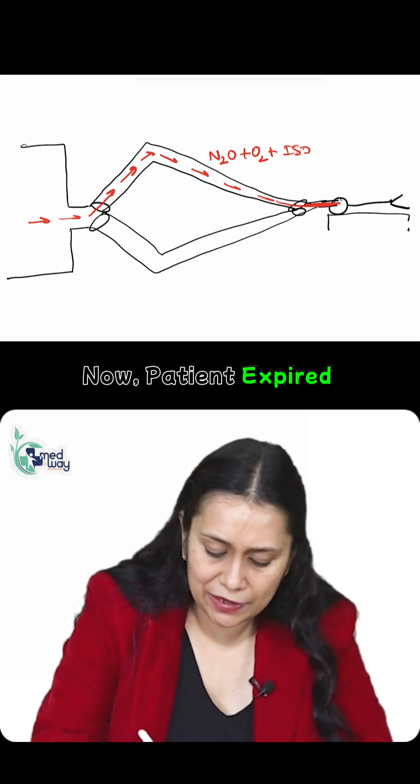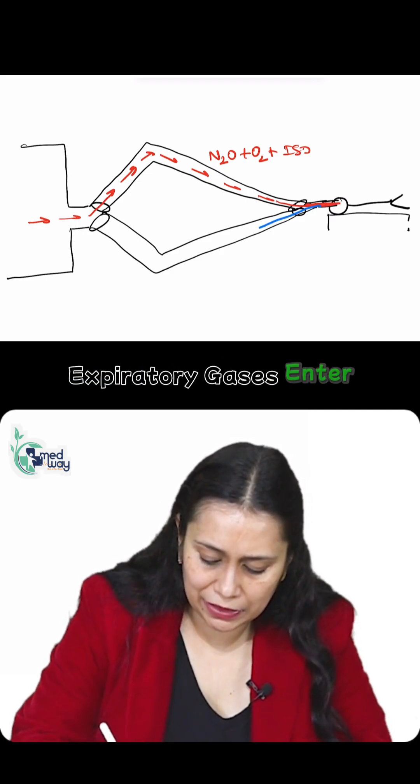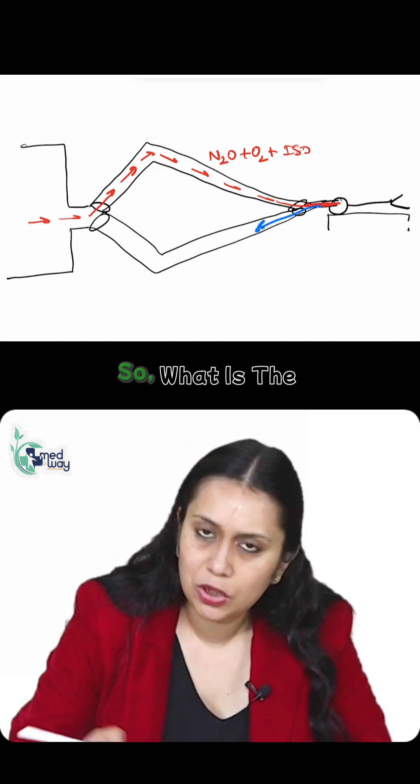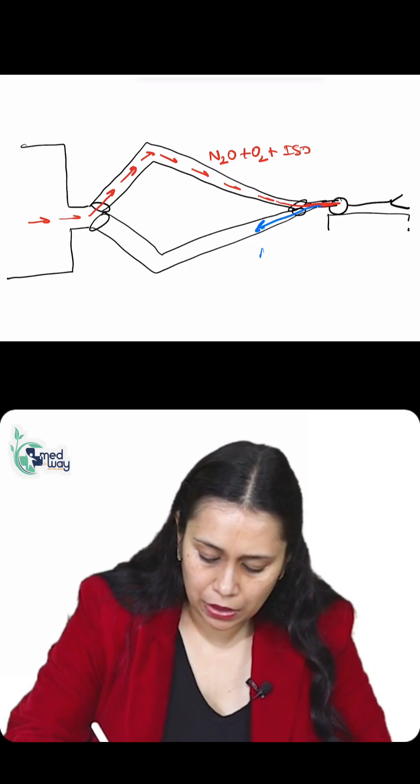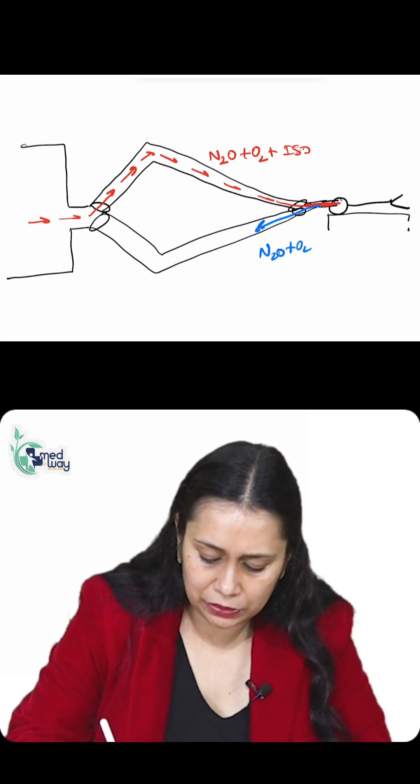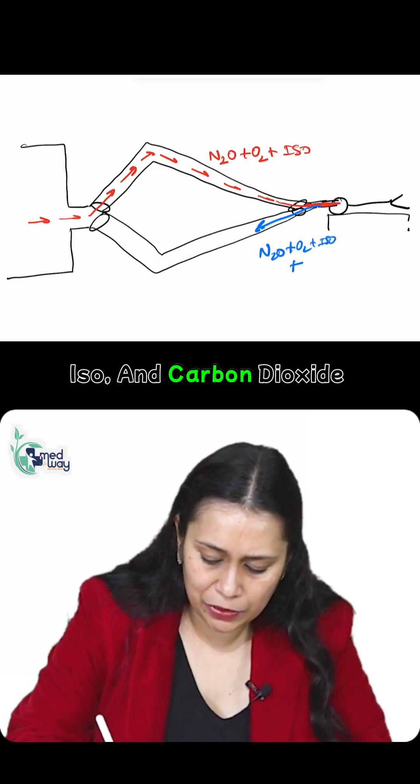Now, the patient expires. Expiratory gases enter the expiratory limb through this one-way valve. What are the expiratory gases? Nitrous oxide, oxygen, iso, and carbon dioxide.